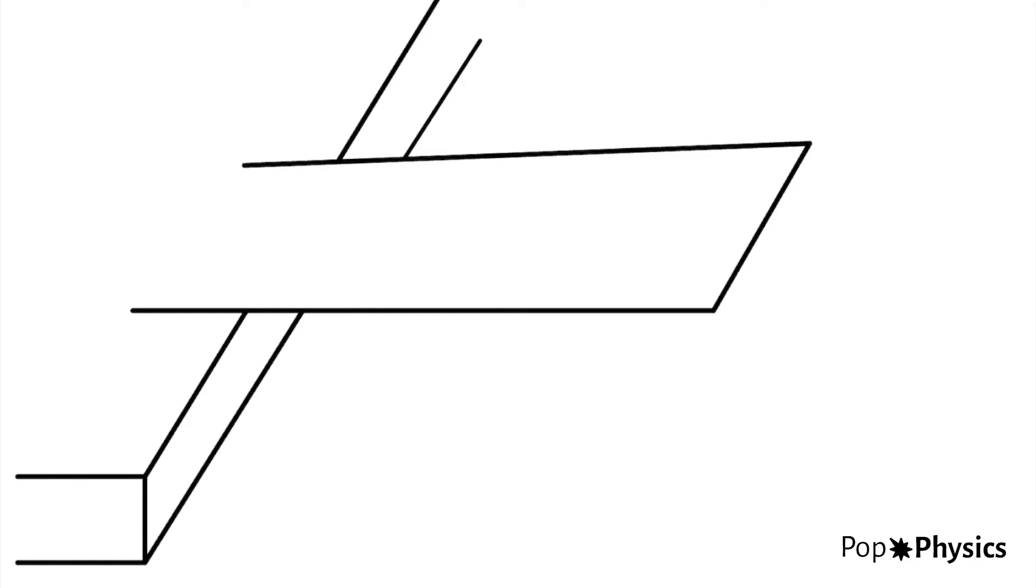When you flick the ruler against a desk, it will move back and forth very quickly. This is called vibration. This vibration is what causes the ruler to produce a note. We can say that this note takes the form of a wave.